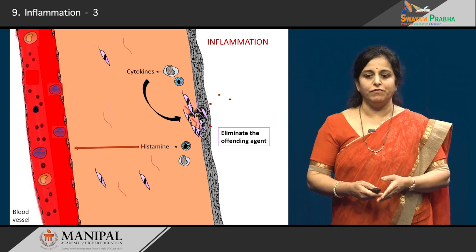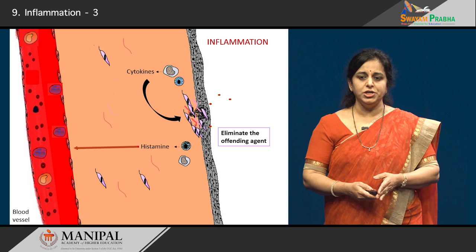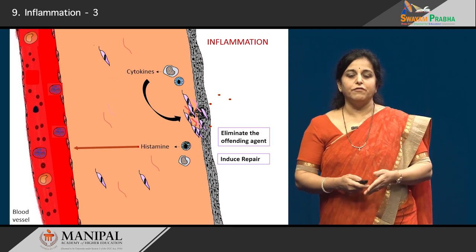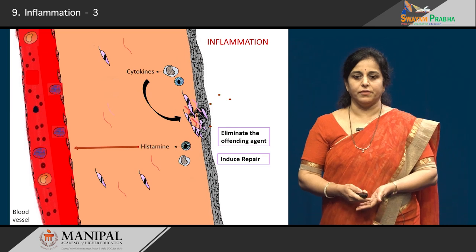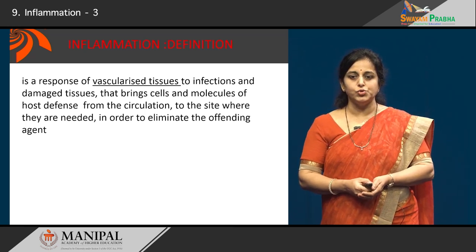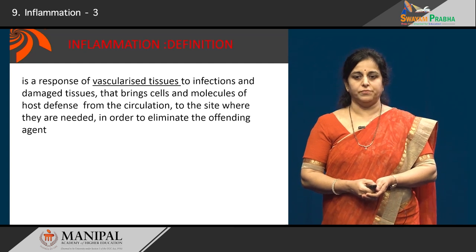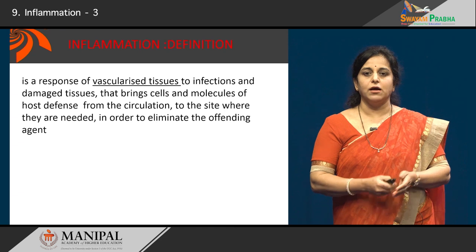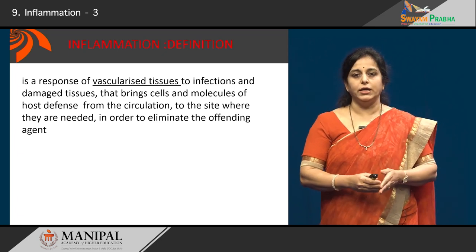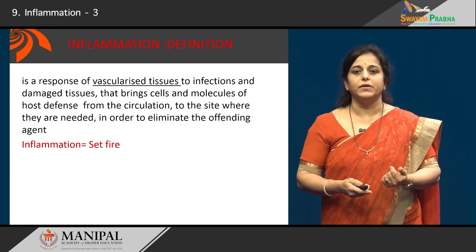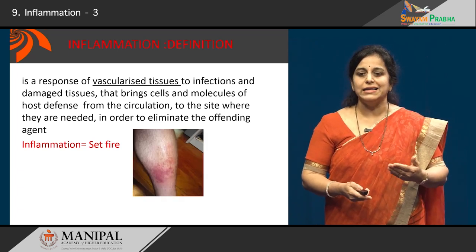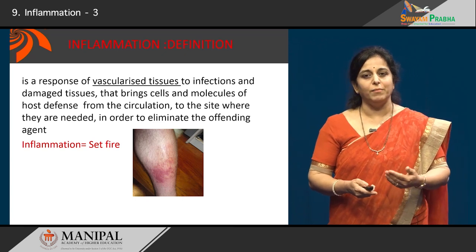The two main features of inflammation are: number one, elimination of the offending agent; and number two, inducing repair at the site of injury. Without inflammation, infections would go unchecked and wounds would never heal. Inflammation is a response of vascularized tissues to infections and damaged tissues that brings cells and molecules of host defense from the circulation to the site where they are needed in order to eliminate the offending agents. The word inflammation is derived from 'inflame' — meaning to set fire — because any inflamed tissue appears red and has increased heat at the site.